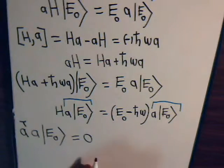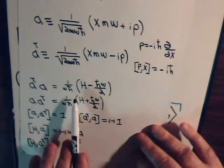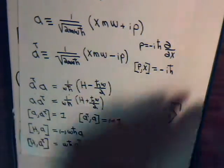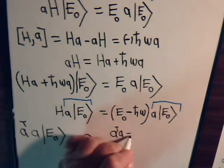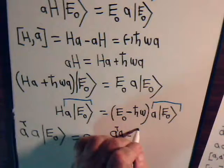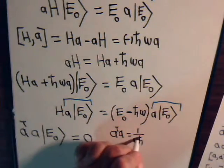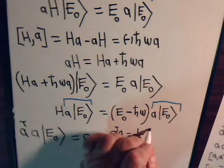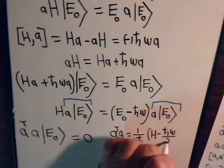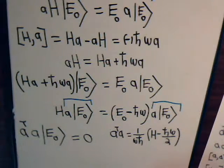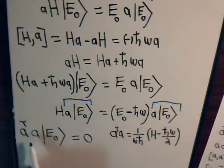But now remember I think it was in video number 23, we established this relationship: A dagger A is equal to this. So let's write it down. A†A equals 1 over ωℏ times the Hamiltonian minus ℏω divided by 2.